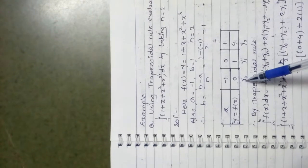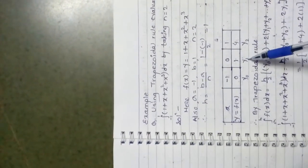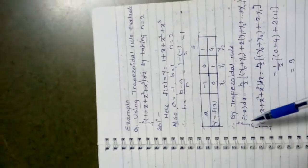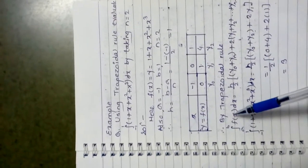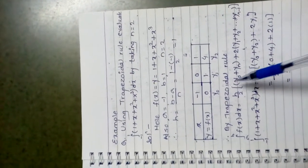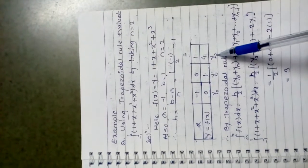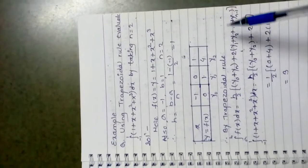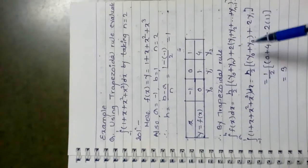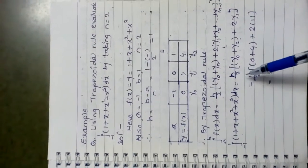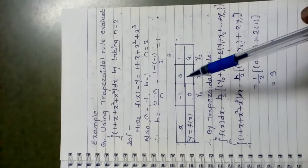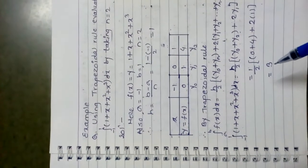Applying the trapezoidal rule: the integral from -1 to 1 of (1 + x + x² + x³) dx = h/2 times [y0 + yn + 2·y1]. Here yn is the last value, which is y2. Substituting: h = 1, y0 = 0, y2 = 4, y1 = 1. That gives (1/2) × [0 + 4 + 2×1] = (1/2) × 6 = 3.